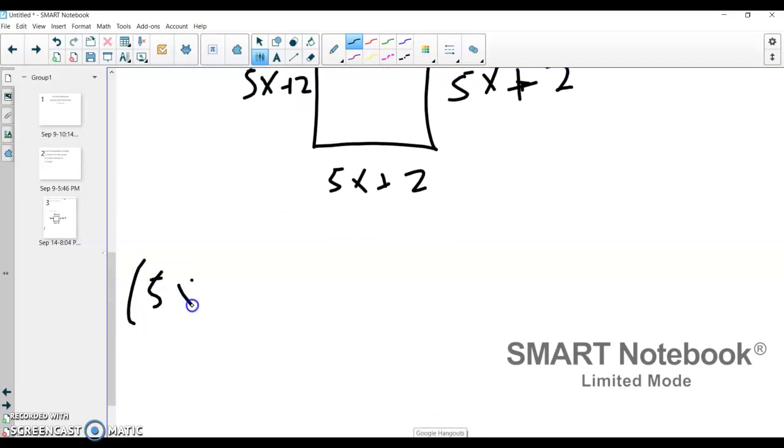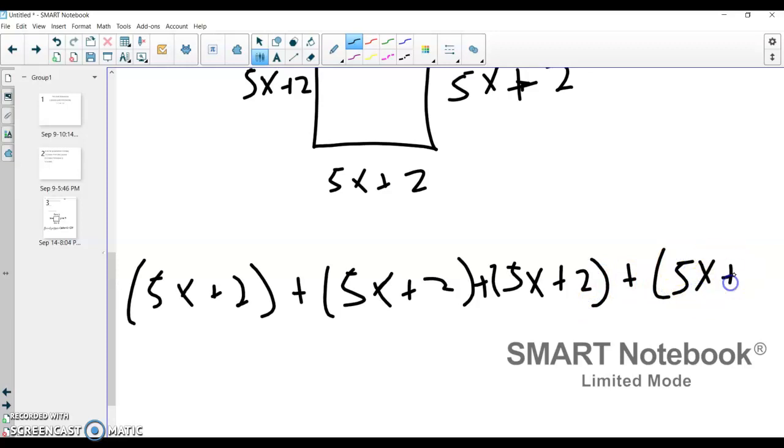It's going to look like 5 times x plus 2 plus 5 times x plus 2 plus 5 times x plus 2 plus 5 times x plus 2, and that whole thing is going to equal 48.